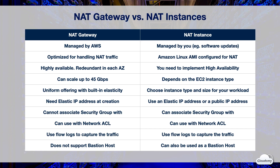NAT gateway provides a uniform offering in terms of type and size with built-in elasticity — you don't need to choose an instance type or size for NAT gateway. When you create a NAT instance, you need to choose a suitable instance type and size according to your predicted workload. To use NAT gateway, you need to associate an elastic IP address with the NAT gateway at its creation. You can use an elastic IP address or a public IP address with a NAT instance, and you can change the public IP address at any time by associating a new elastic IP address with the instance.